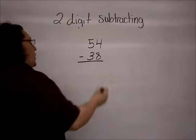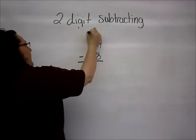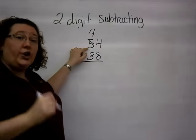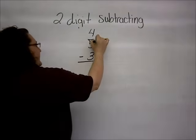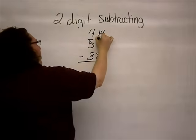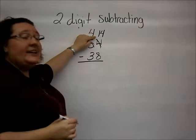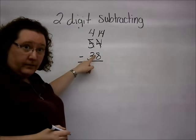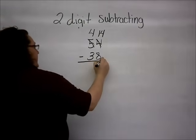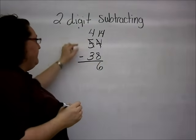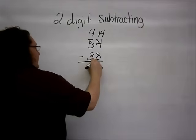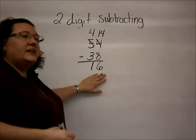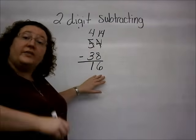So we go next door and borrow 1 from the 10's place. We take that one 10 that we borrowed and turn it into 10 1's and add it so that now the top number in the 1's place is larger than the bottom. 14 minus 8 would give us 6. And 4 minus 3 would give us 1. So, we end up with 16 as our answer. Now, let's take a look at the same problem, but do it with the mental math.